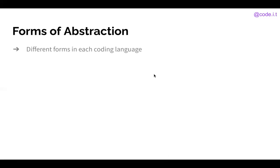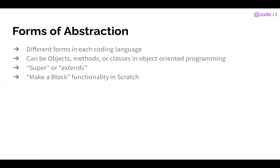Forms of abstraction. So as there are lots of different coding languages, abstraction will look a little bit different in each one. Here are some things to look out for. In Java, for example, it can be objects, methods, or classes. You might also find things like that in other object-oriented programming languages. Look for keywords like super or extends. Those can work with multiple classes and object types to provide abstraction throughout different programs. And like we just discussed, there's that make a block functionality in Scratch.